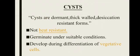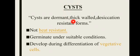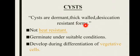اس کے بعد bacteria cell کا last component ہے جسے cyst کہتے ہیں۔ Cyst بھی dormant body ہوتی ہے۔ Spores اور cyst میں فرق یہ ہے کہ spores کی walls thin ہوتی ہیں لیکن cyst کی wall thick ہوتی ہے۔ Cyst کا کام bascally desiccation سے بچانا ہوتا ہے، یعنی thick wall desiccation resistant forms بناتی ہے۔